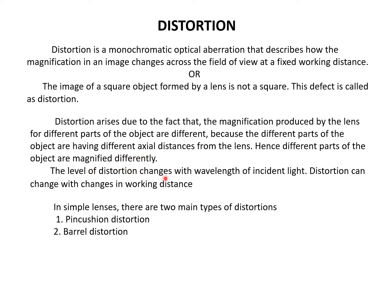The level of distortion changes with the wavelength of incident light. Distortion can also change with changes in working distance. So, distortion depends upon two factors: one is the wavelength of incident light, and the other is the distance of the object from the lens.